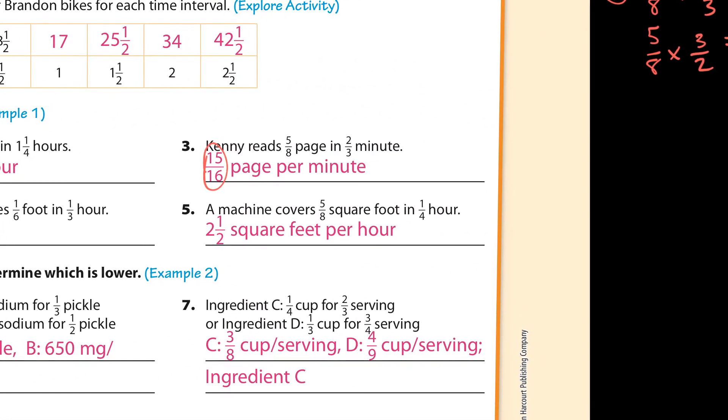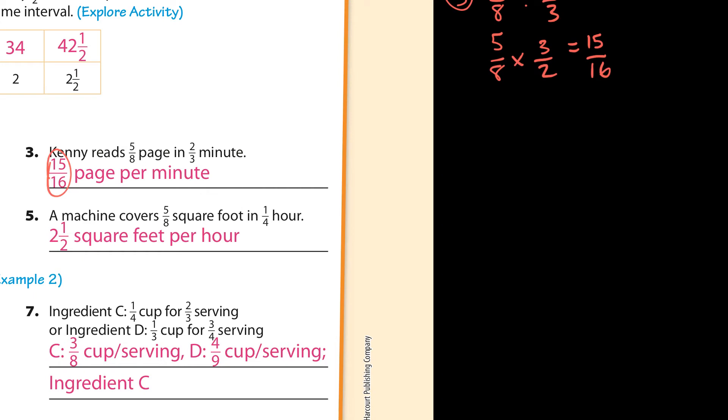Number 5, 5 eighths divided by 1 fourth. So that's 5 eighths times 4 over 1. Now you can cross cancel on this one. You can divide each of these by 4. 4 divided by 4 is 1, 8 divided by 4 is 2. Then you multiply 5 times 1 and 2 times 1. Making this a mixed number, 2 goes into 5 two times with one left over, 2 and a half.